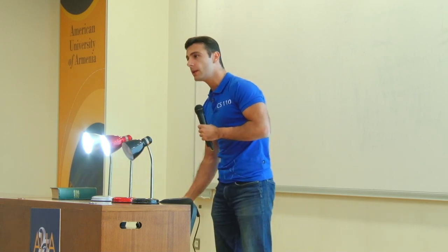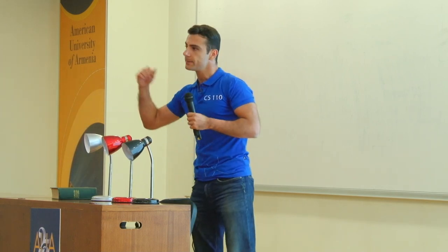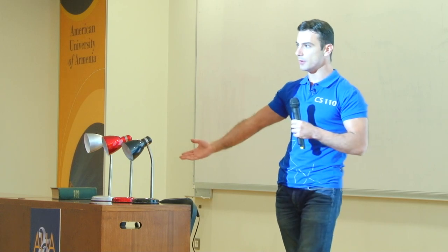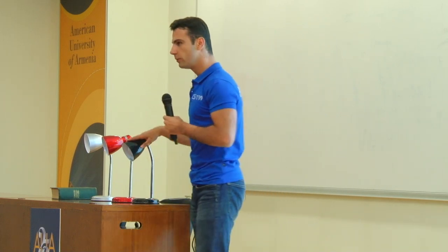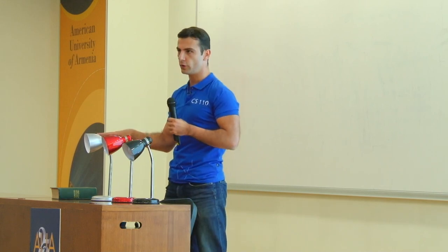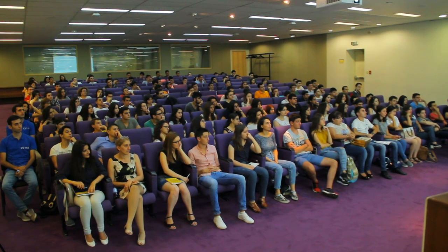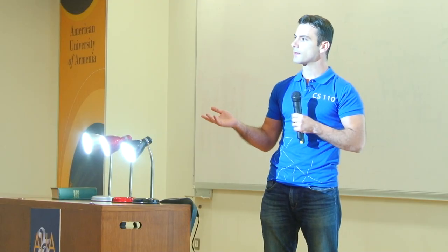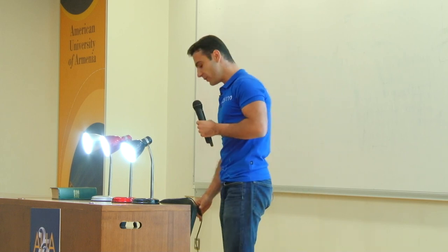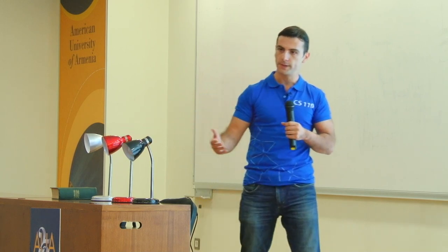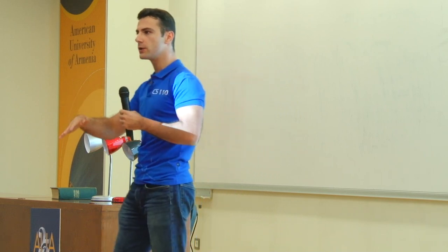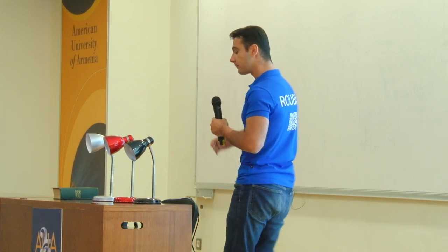Given three of these switches, how many different combinations of numbers can I produce? Eight — two times two times two, or two to the power of three. But wait — the maximum number we showed was seven. That's because we start from zero. You'll notice this in computer science: whenever we're counting, we begin with zero rather than one.